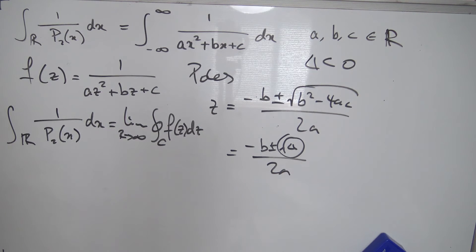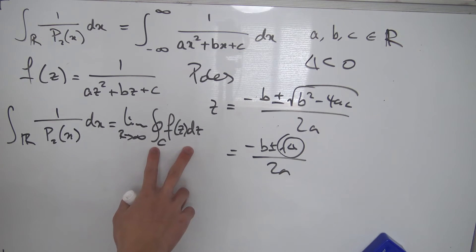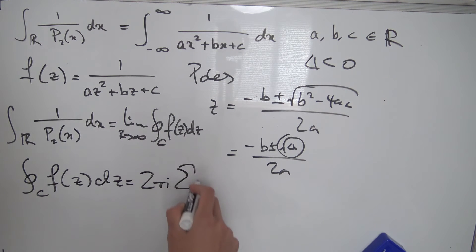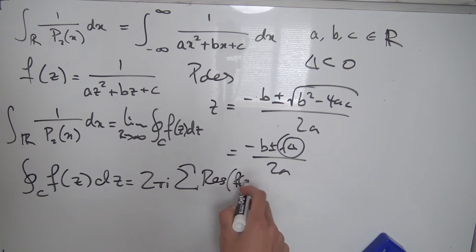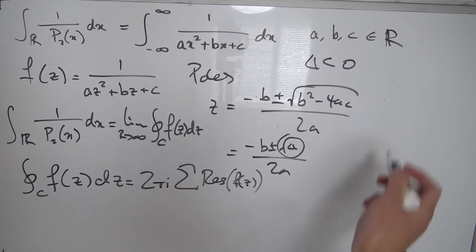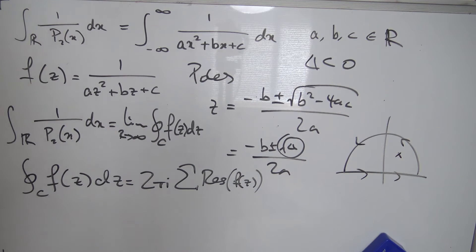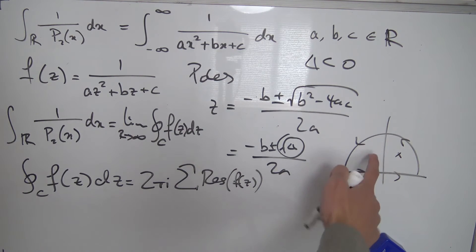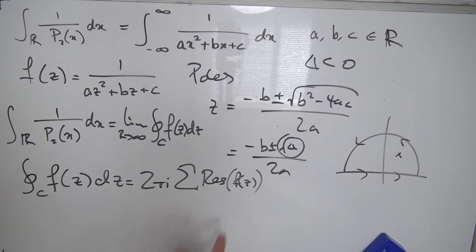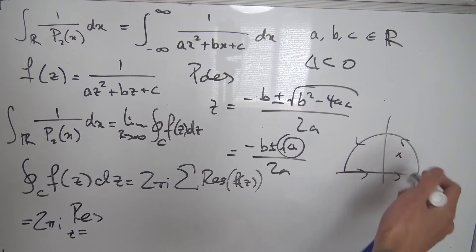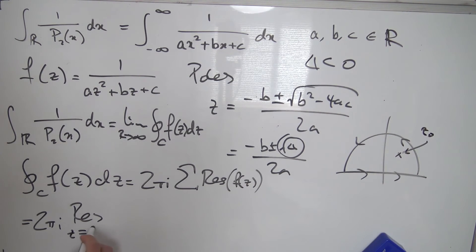So our original integral equals the limit as r → ∞ of the contour integral over C of f(z) dz, since the gamma part vanishes. Now we need to find what the contour integral over C is, and this is where we use the residue theorem. The residue theorem tells us that the contour integral over C equals 2πi times the sum of the residues of f(z). Since we have a semicircular contour enclosing only one pole — call it z₀ in the upper half-plane — this equals 2πi times the residue of f at z = z₀.